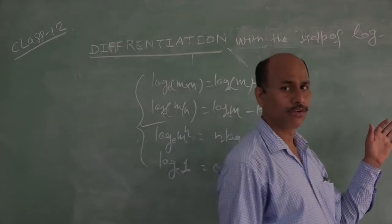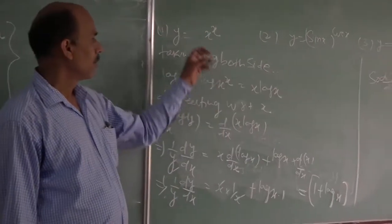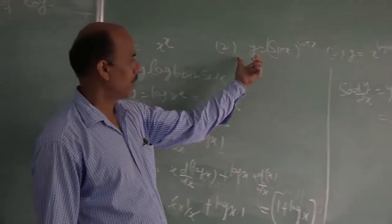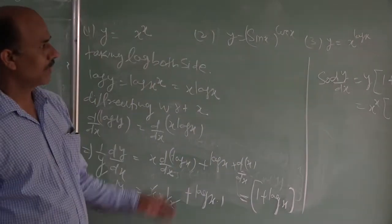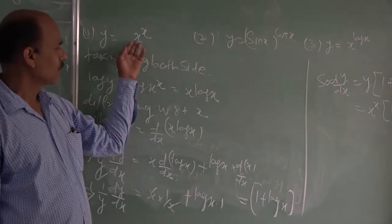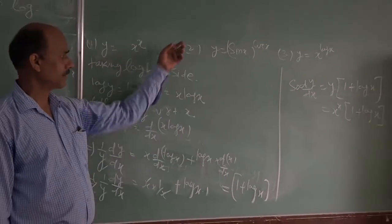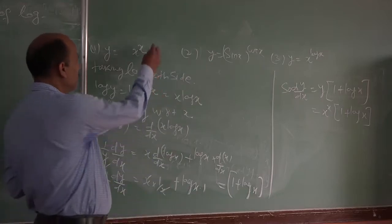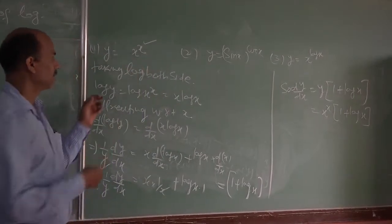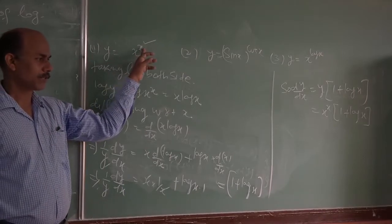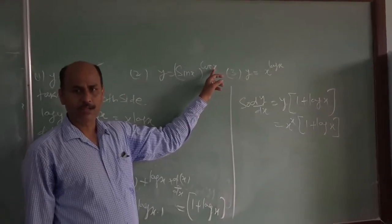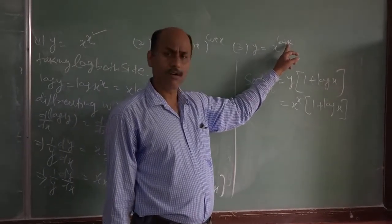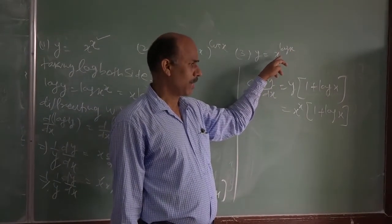So first we should look into why we have to use logarithmic differentiation and take the log. There are three examples here: y = x^x, next is y = sin(x)^cos(x), and next is y = x^log(x). You can compare all three examples — the difference is that here the base is a variable and the power is also given as a variable.